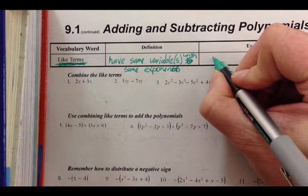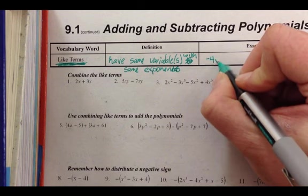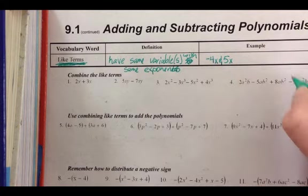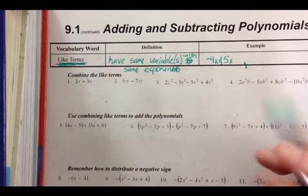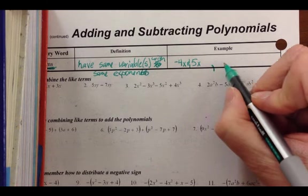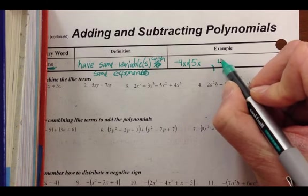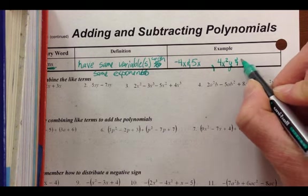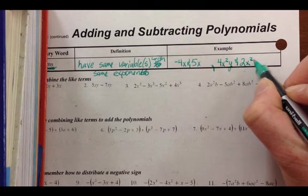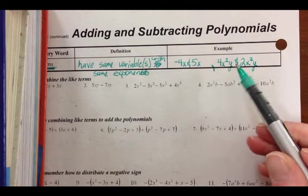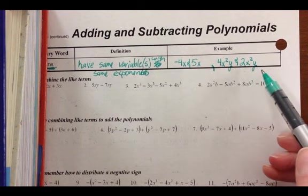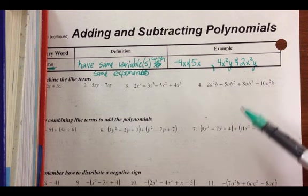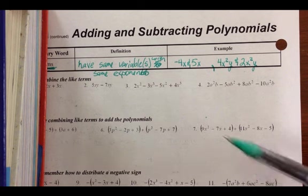So the ones that we're used to seeing are things like negative 4x and 5x. The ones we're going to see now that we haven't seen, I'll give you two examples of that version. And we could see something like 4x squared y and 2x squared y. But now our variables, they have to have x squared, and it has to have y. It has to have the exact same variables with the exact same exponents. Technically we can change order, but when we write things down, we're always going to put things in alphabetical order, so we don't have to worry about that piece.